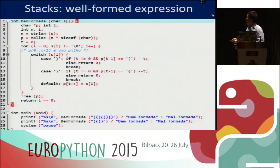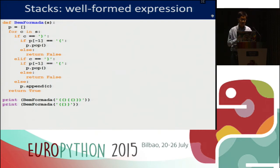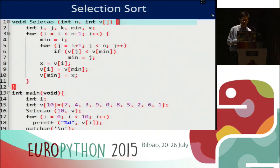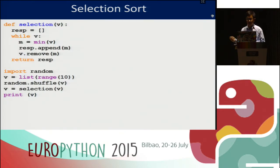Stacks. We need to check whether an expression is well-formed. The equivalent C language algorithm in Python is more clear than in C — it's a direct way to see the essence. For selection sort, the manipulation of the index to find the minimum of the vector and swap it to the front is a bit more complex in C than the equivalent algorithm in Python.